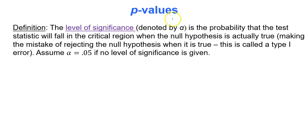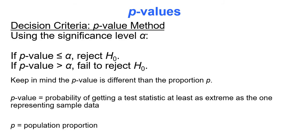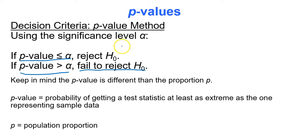The level of significance, denoted by alpha, is the probability that the test statistic will fall in the critical region when the null hypothesis is actually true. We'll always assume alpha is 0.05 if no level of significance is given. We compare the p-value to this level of significance to determine whether to reject or fail to reject the null hypothesis. If the p-value is less than or equal to alpha, we reject the null hypothesis, giving the possibility that the alternative hypothesis is potentially true. If the p-value is greater than alpha, we fail to reject the null hypothesis and cannot say anything about the alternative.